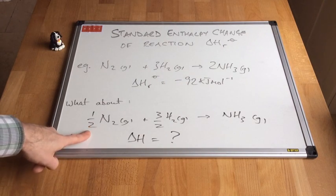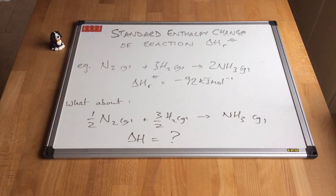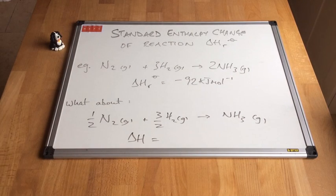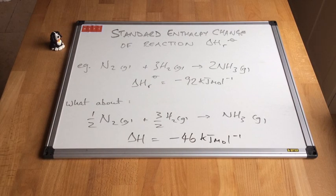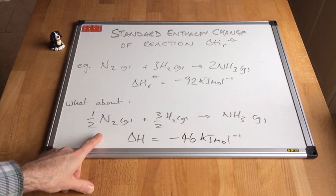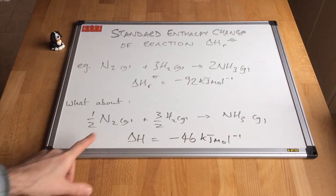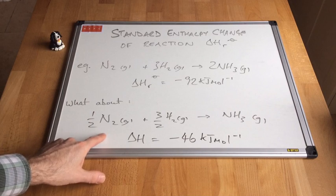Now, what about if we halve everything? We have half a mole of nitrogen, three over two moles of hydrogen, making one mole of ammonia. The enthalpy change for that reaction would be half of minus 92, so it would be minus 46 kilojoules per mole. We'll come back to this reaction when we look at the third standard enthalpy change.